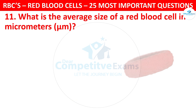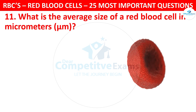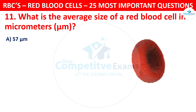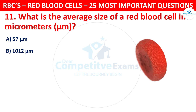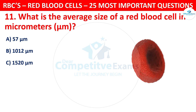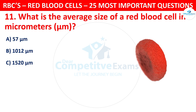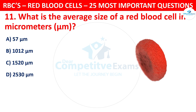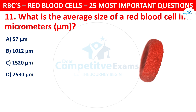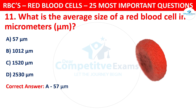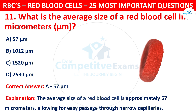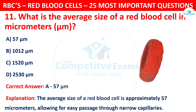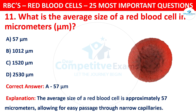Question 11. What is the average size of a red blood cell in micrometers? The options are: 5–7 micrometers, 10–12 micrometers, 15–20 micrometers, or 25–30 micrometers. The correct answer is A, that is 5–7 micrometers. The average size of red blood cells is approximately 5–7 micrometers, allowing for easy passage through narrow capillaries.